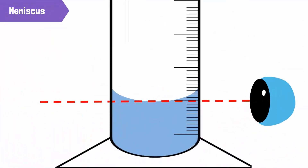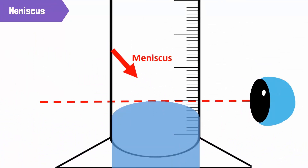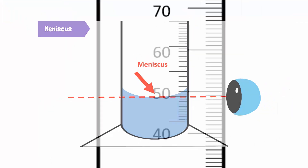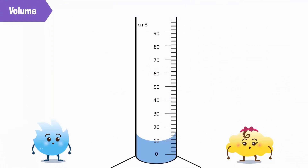Always take the middle of the meniscus to measure. The liquid can curve up or down in the cylinder as a result of the attraction of the liquid with the cylinder. Record the volume of the liquid by recording where the bottom of the meniscus falls. We can measure the volume of an object by adding it to the cylinder and measuring the difference in volume.